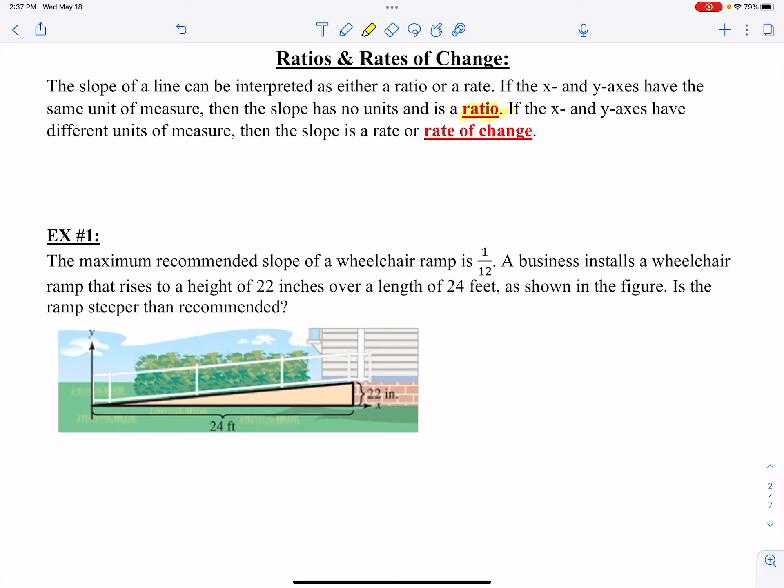I've got a recommended slope of a wheelchair ramp. The maximum slope, the steepness of this wheelchair ramp is recommended to be no more than 1/12th. A business installs a wheelchair ramp that rises to a height of 22 inches over a length of 24 feet as shown in the figure. Is the ramp steeper than recommended?